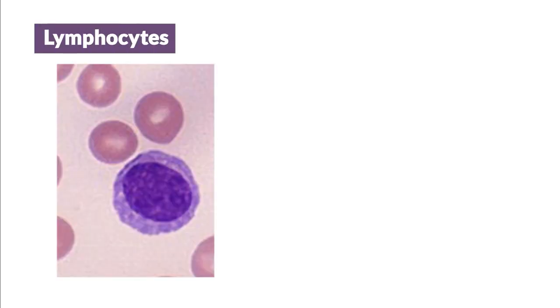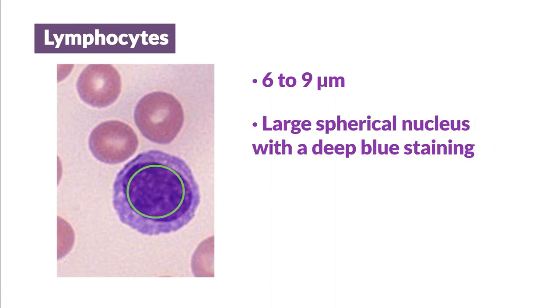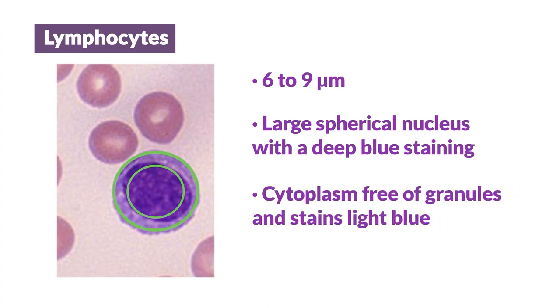Agranulocytes. Lymphocytes. These are the smallest of all leukocytes. They range in size from 6 to 10 micrometers. Lymphocytes are characterized by a large spherical nucleus with a deep blue staining. This nucleus is surrounded by a scanty cytoplasm that is free of granules and stains lighter blue than the nucleus. Lymphocytes represent about 20 to 40% of the total number of leukocytes.